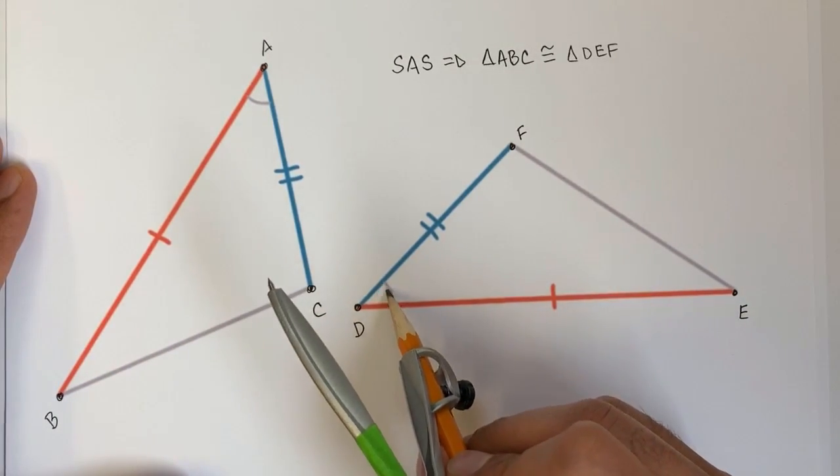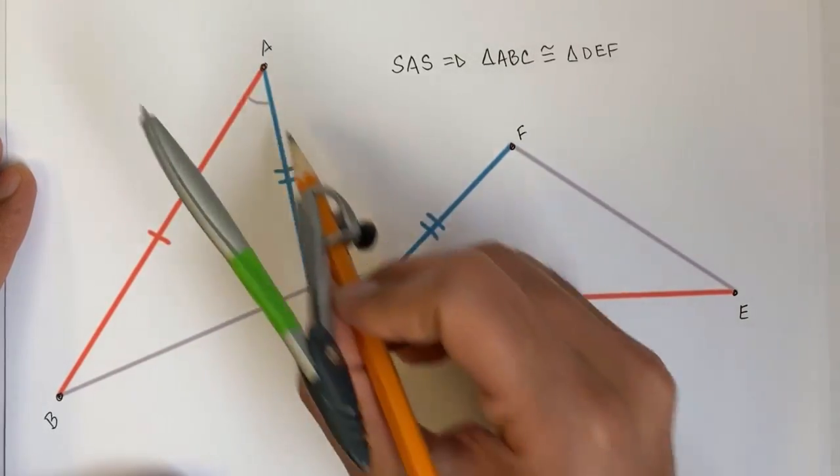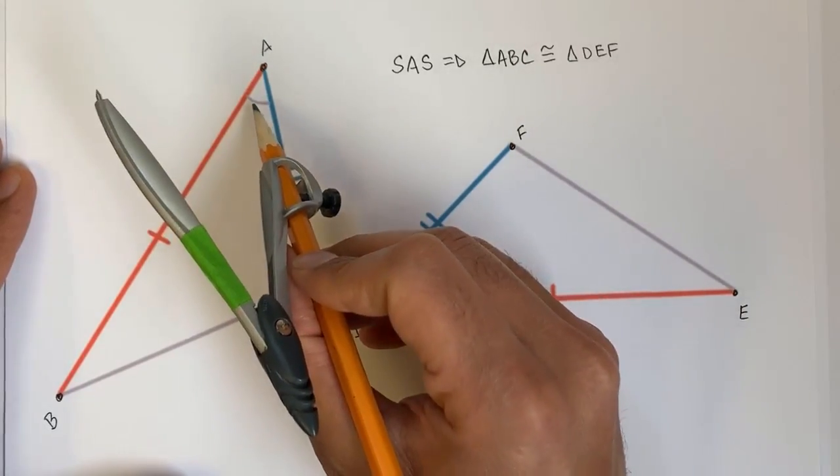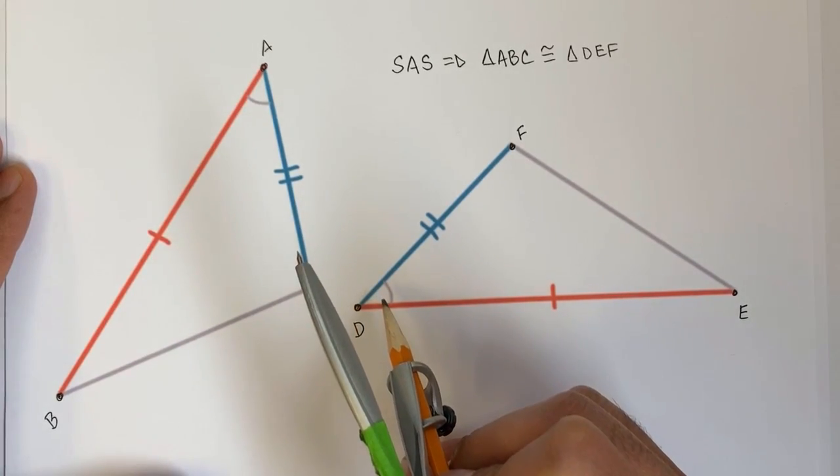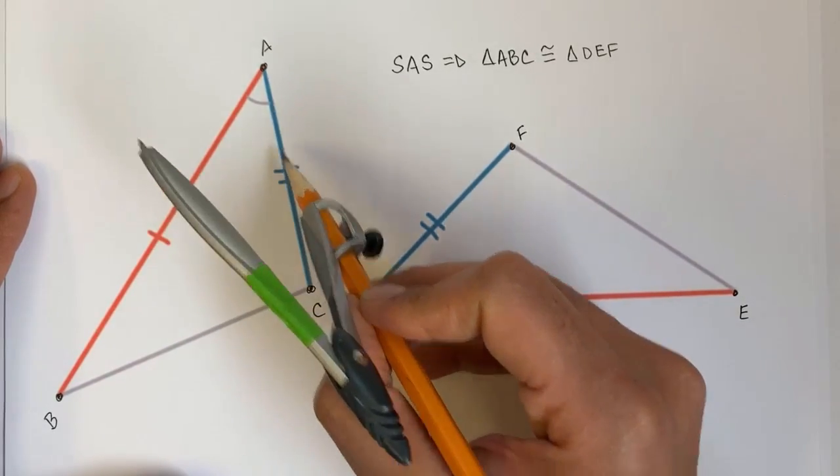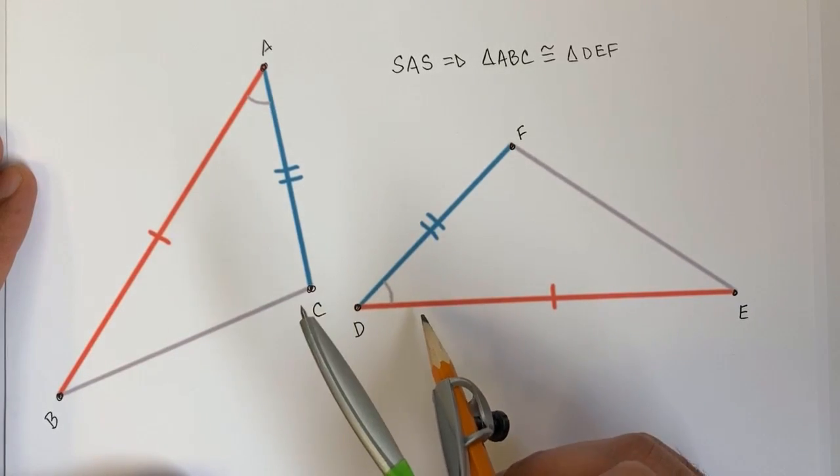And the angle that is formed between those sides, so we have two corresponding angles right over here, that they also have the equal measure. So we could think about we have a side, an angle, a side, a side, an angle, and a side.